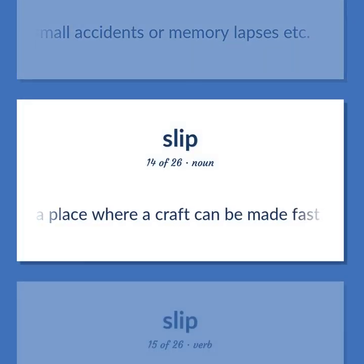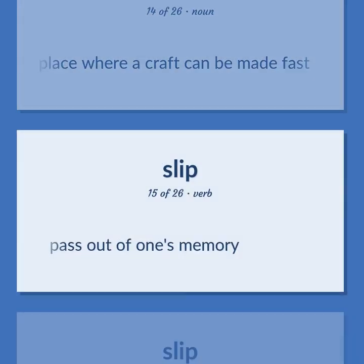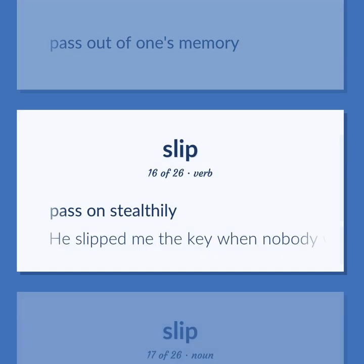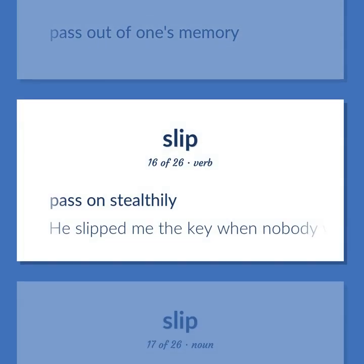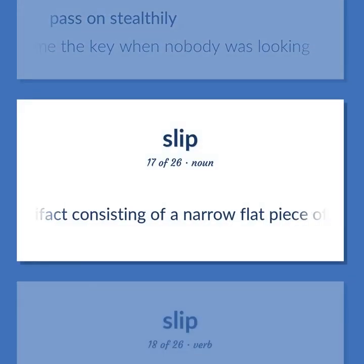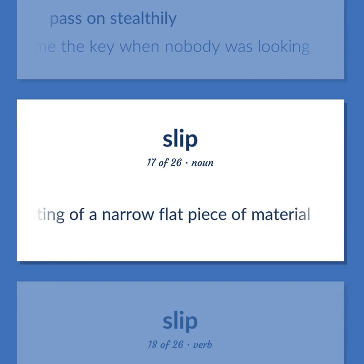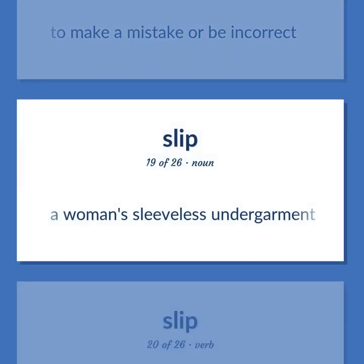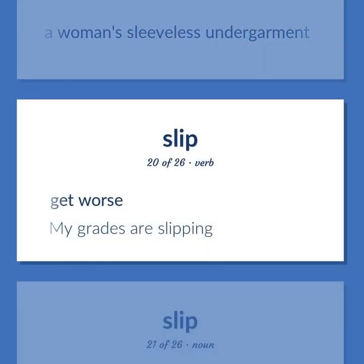A minor inadvertent mistake usually observed in speech or writing or in small accidents or memory lapses. A place where a craft can be made fast. To pass out of one's memory. To pass on stealthily — he slipped me the key when nobody was looking. An artifact consisting of a narrow flat piece of material. To make a mistake or be incorrect. A woman's sleeveless undergarment. To get worse — my grades are slipping.